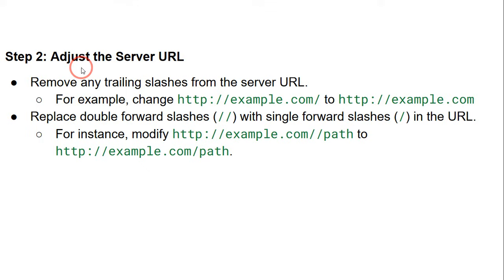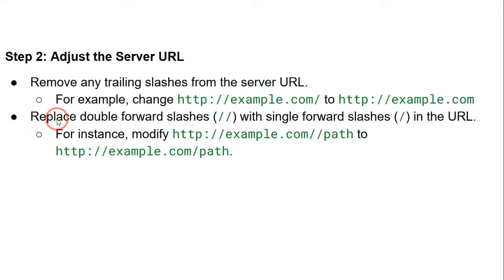In the next step, you need to adjust the server URL. Remove any trailing slashes from the server URL — for example, change the URL by removing the slash at the end, as you can see here. Then replace any double forward slashes with a single forward slash.